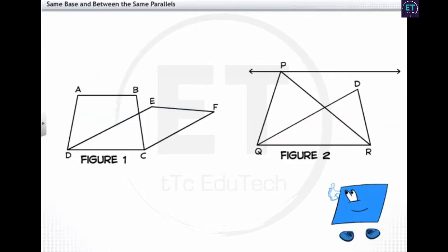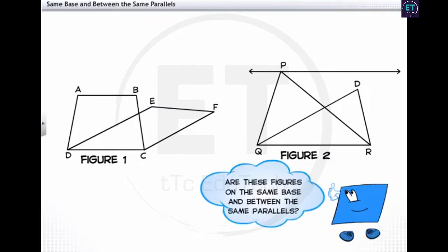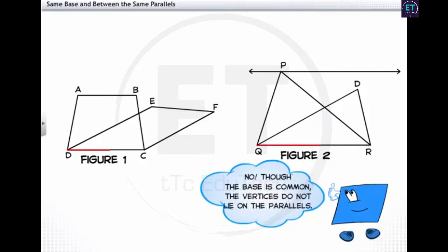Now look at these figures. Can we say that these figures are on the same base and between the same parallels? No — though the base is common, the vertices opposite to the base do not lie on the line parallel to the base.